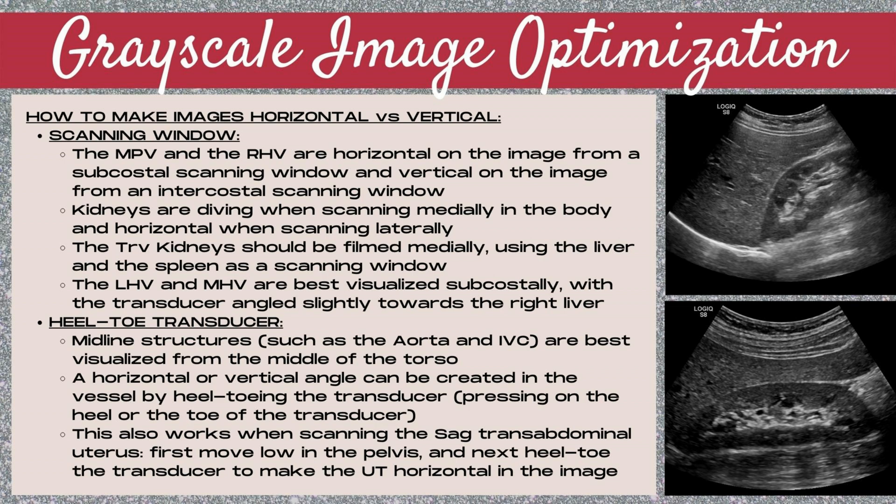Another example: the left hepatic vein and middle hepatic vein are best visualized subcostally with the transducer angled slightly towards the right liver. Another method of making vessels and structures horizontal versus vertical is by heel-toeing the transducer — pressing either the top or bottom portion of the transducer a little harder than the other end. Midline structures like the aorta and IVC are best visualized from the middle of the torso, and heel-toeing is the best method to make them more vertical. Either a horizontal or vertical angle can be created by pressing on the heel or toe of the transducer.